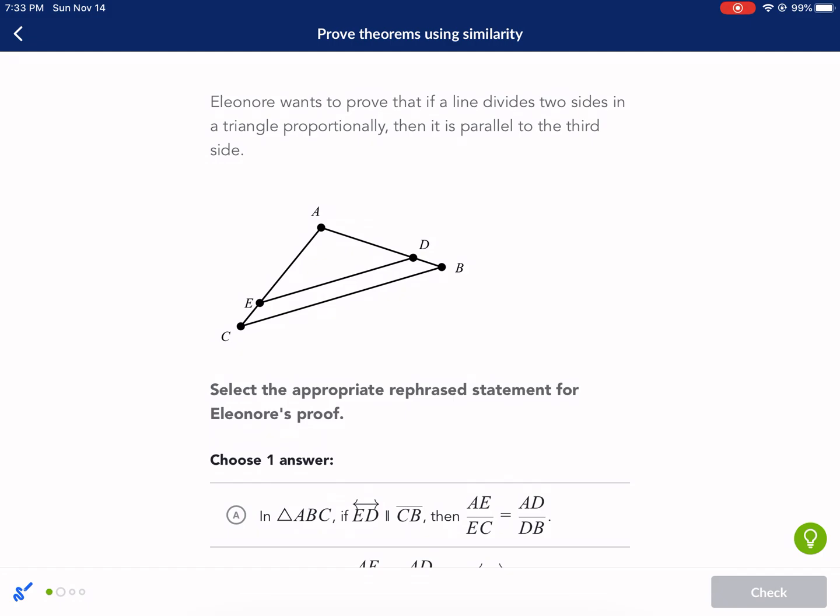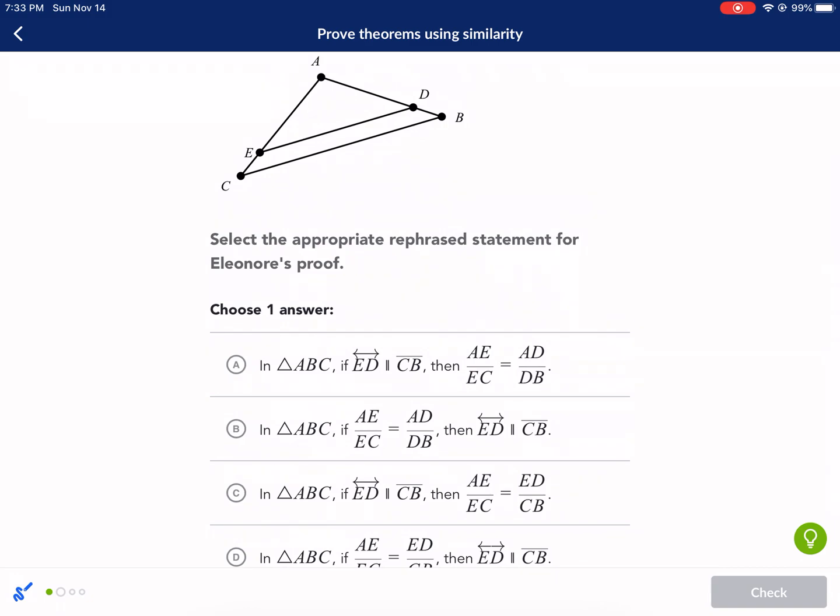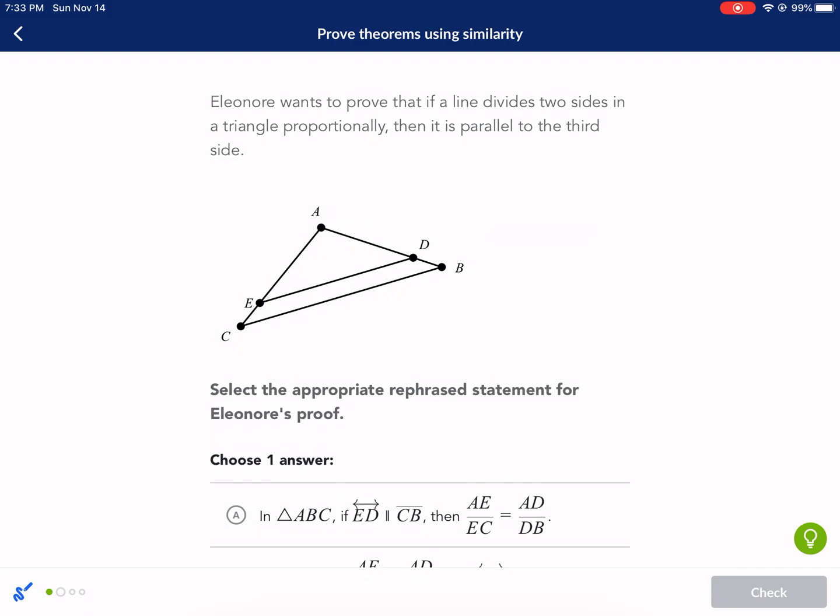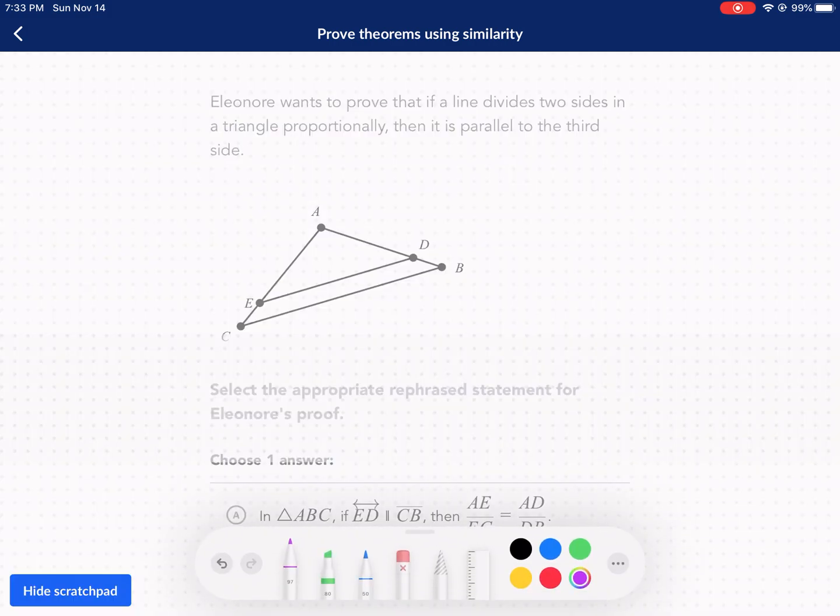Eleanor wants to prove that if a line divides two sides in a triangle proportionally, then it's parallel to the third side. Select the appropriate rephrase statement for Eleanor's proof. This is one of those kind of obscure theorems. It's saying if it divides this proportionally, where CE over AE... I thought it was writing. Actually no, that's not the side of the triangle. So just rewind here. I'm trying to highlight.